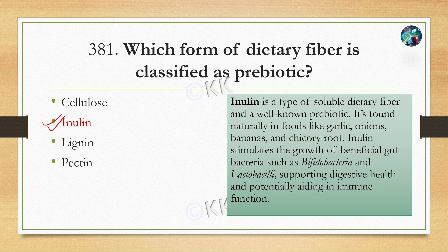Inulin is a type of soluble dietary fiber which acts as a prebiotic that stimulates the growth of beneficial gut bacteria like Bifidobacterium, Lactobacillus, etc., which further support digestive and potentially immune functions as well. Inulin is primarily found in foods like garlic, onion, bananas, etc.